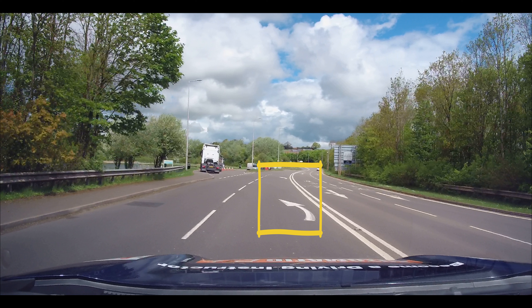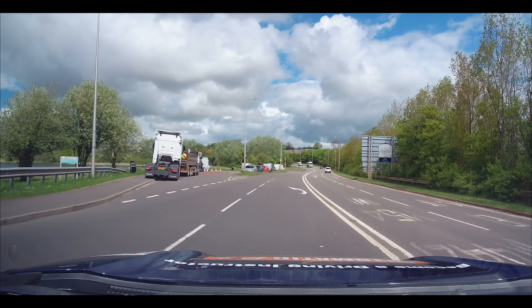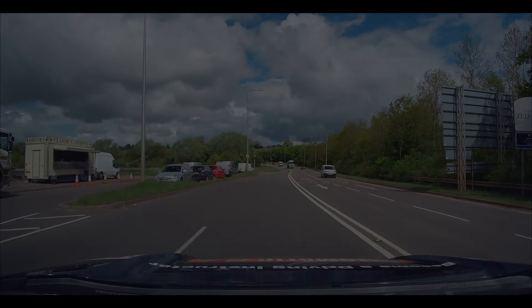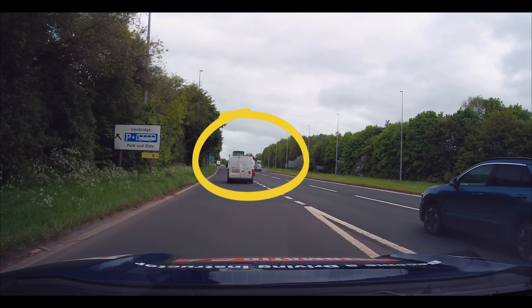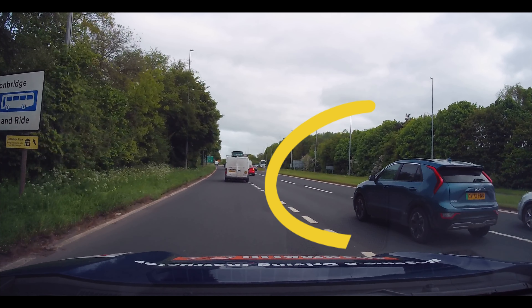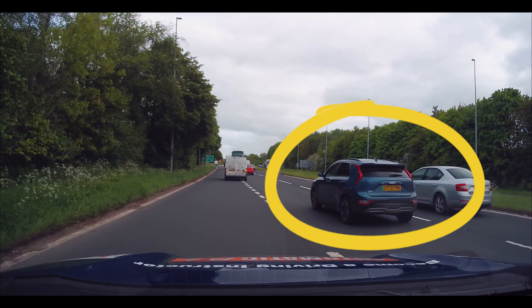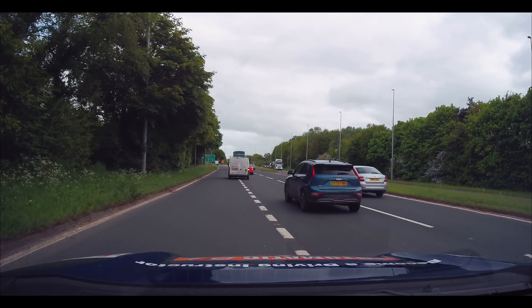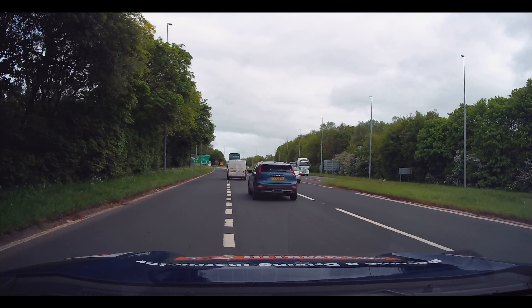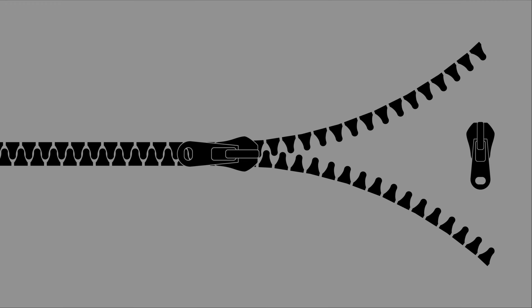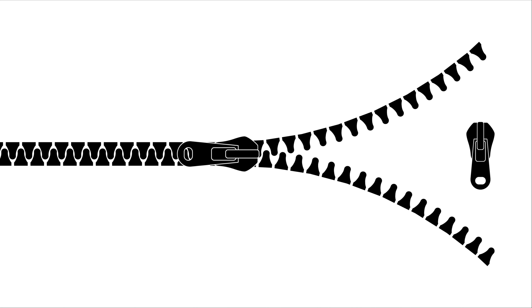So why do they do the road layout like this? Well, basically to help congestion. Zip merging is where the car on the left moves into the gap, the car on the right follows behind it, then as the car on the left goes into the next gap, the vehicle on the right goes into the gap also.